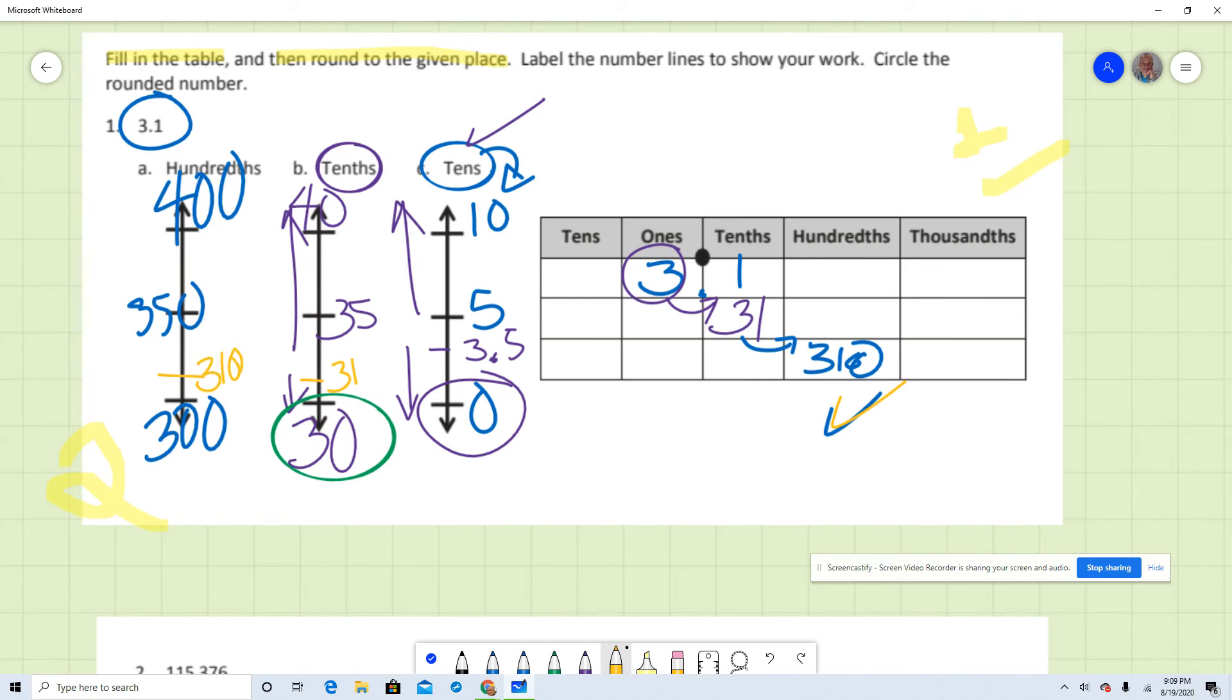Sorry, my zeros look like sixes. So now we can conclude that 310 is closer to 300 and is not closer to 400. So we're going to round to 300. And this is how you're going to be working.